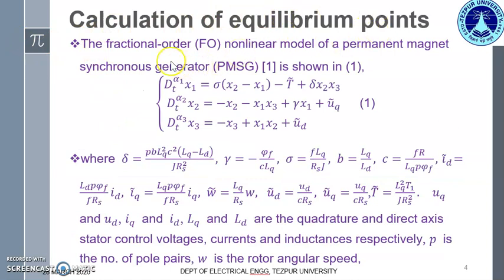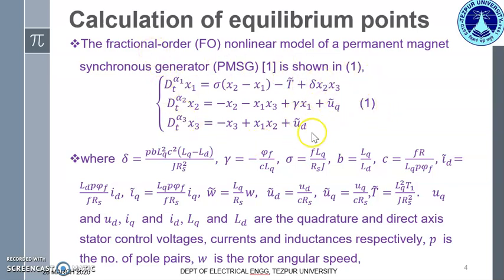Let us consider an example: a fractional order nonlinear model of a Permanent Magnet Synchronous Generator (PMSG), taken from Reference 1, as shown in equation number 1. This is a set of equations representing the model, where delta, gamma, sigma, b, c and so on are the physical parameters as indicated.